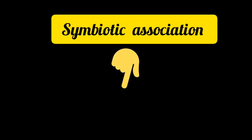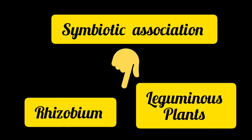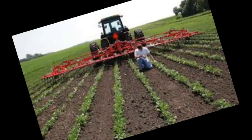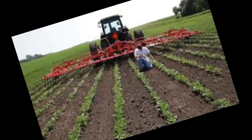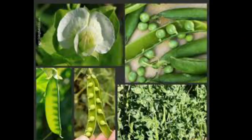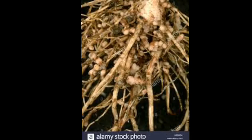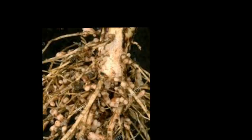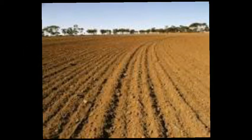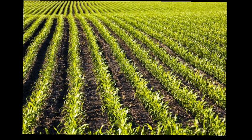This is the symbiotic association between rhizobium and the leguminous plant. Other than that, farmers sometimes grow leguminous plants in between two cereal crops or any other plants, because leguminous plants contain nitrogen-fixing bacteria, and these bacteria help in the replenishment of the soil. Replenishment is a process in which the physical and chemical properties of the soil are regained and the soil becomes fit for cultivation. This was all about symbiotic plants and the replenishment of nutrition in the soil.